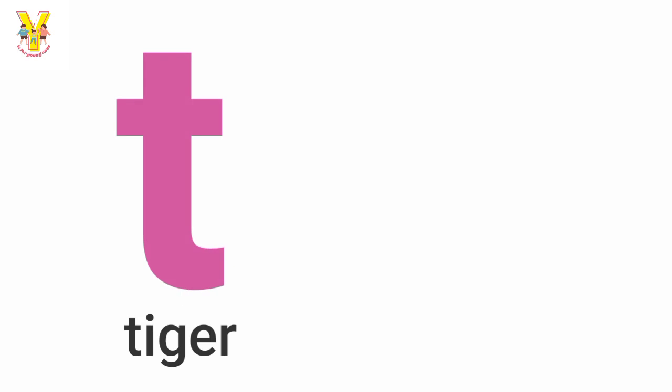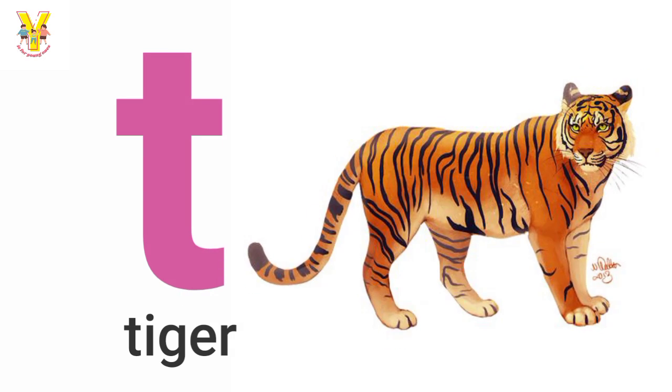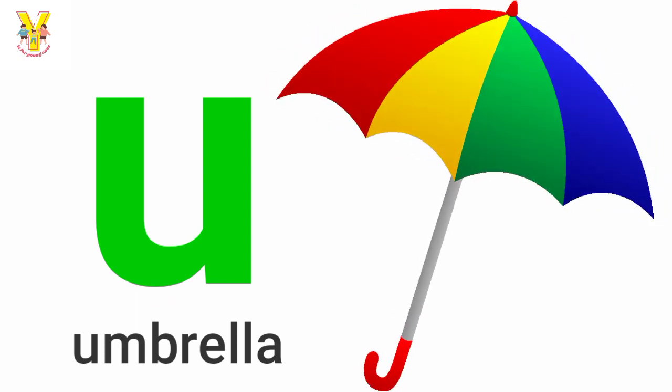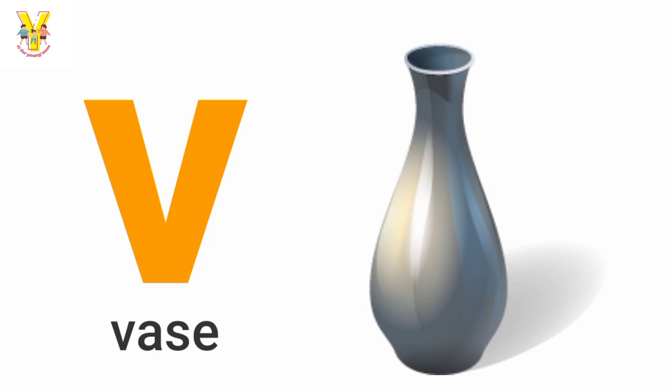D for Tiger, U for Umbrella, V for Vars.